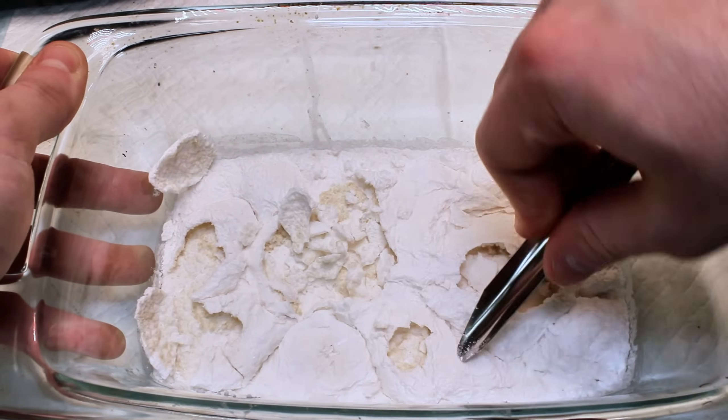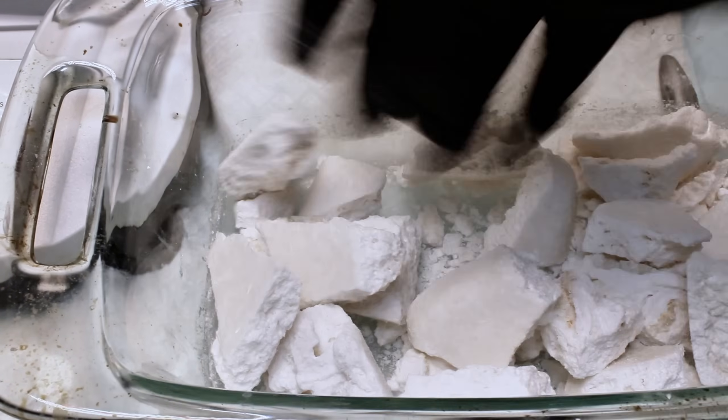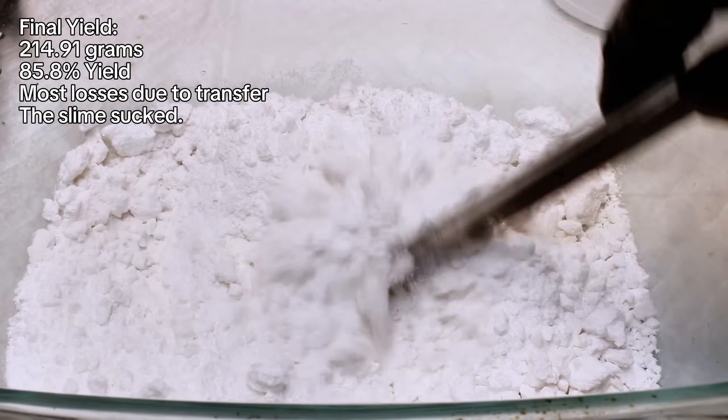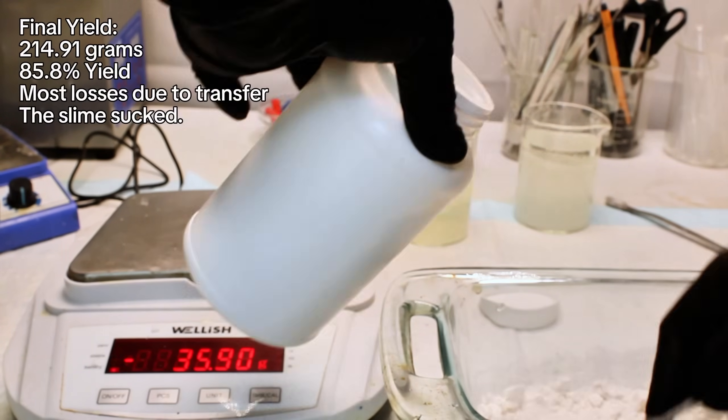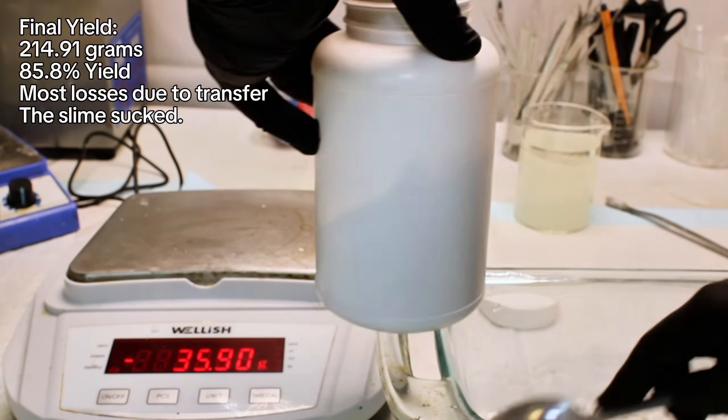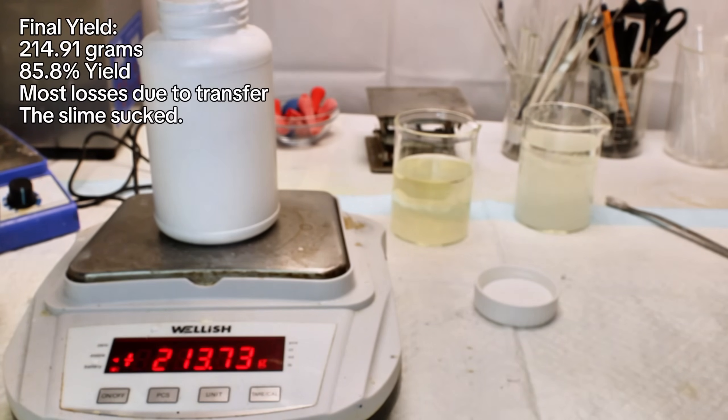The resulting slab of calcium nitrate was broken apart, powdered, and weighed for a final mass of 214.91 grams representing an 85.8% yield, with most of the 14.2% loss being in transferring the calcium nitrate between containers.